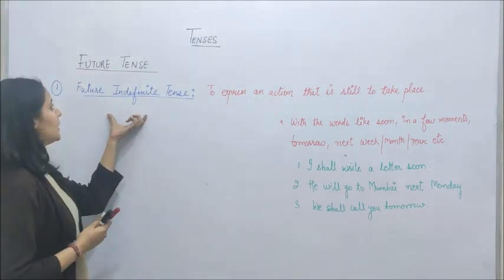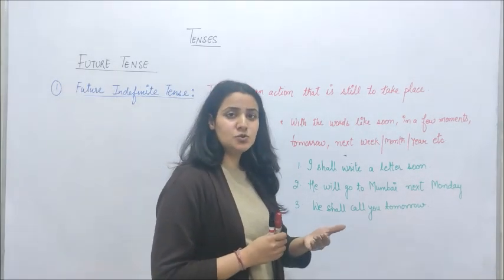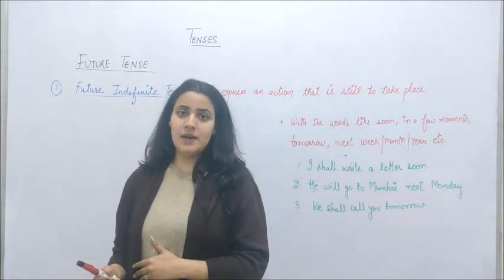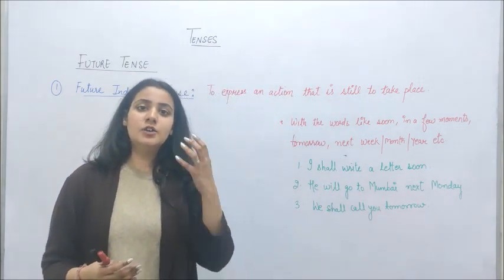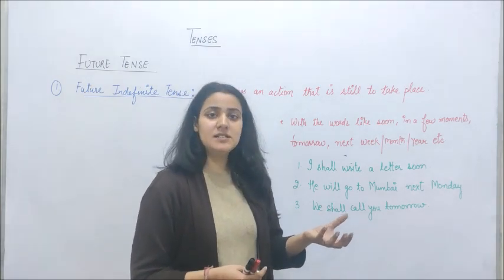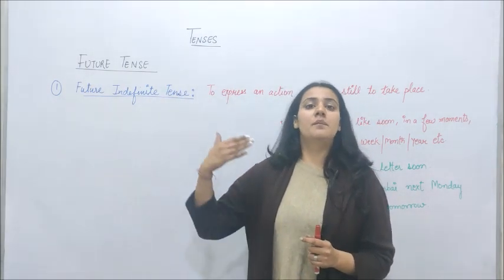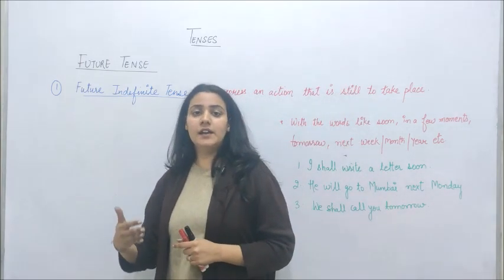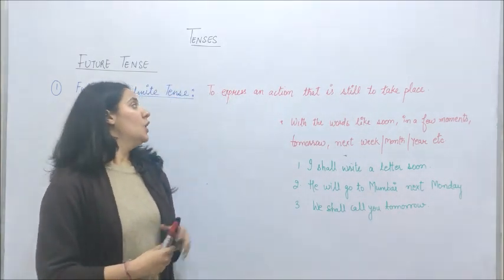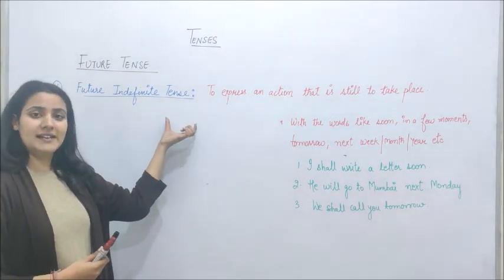The first type of future tense is future indefinite tense. We have done present indefinite tense, which tells us about present regular activities. If you talk about past indefinite tense, it is about past happenings or past regular activities. Similarly, if you talk about future indefinite tense, these are your future actions that are about to take place — which are still going to happen. This is called future indefinite tense.